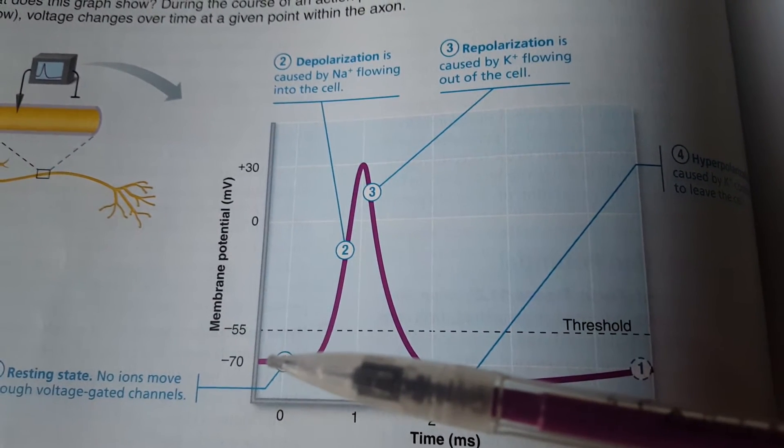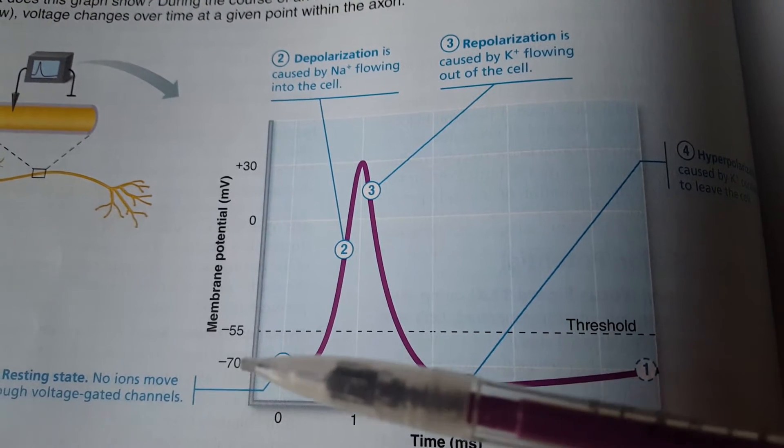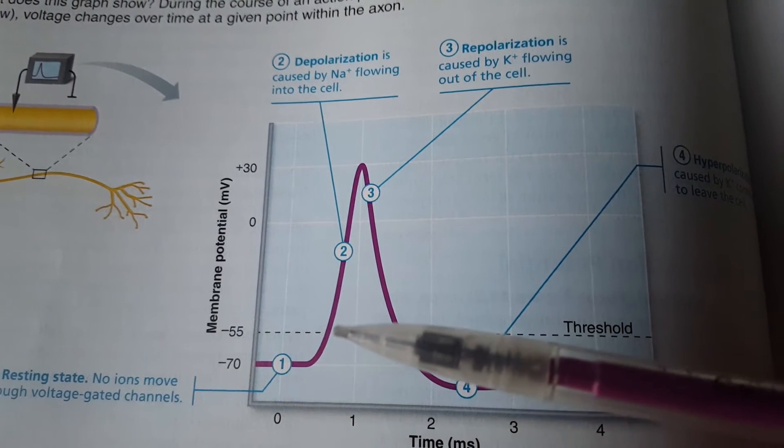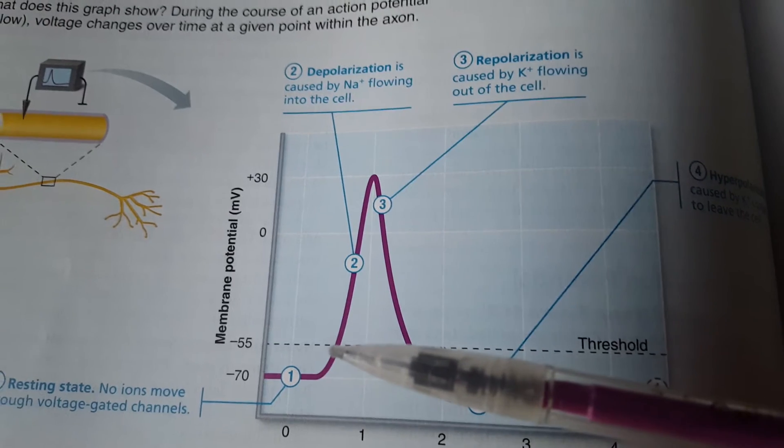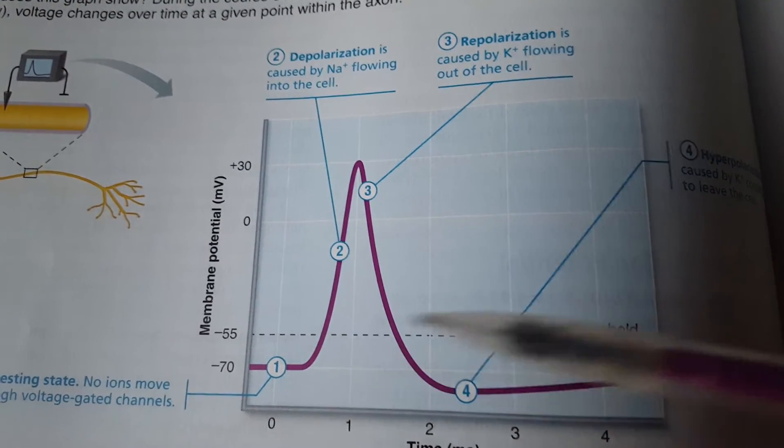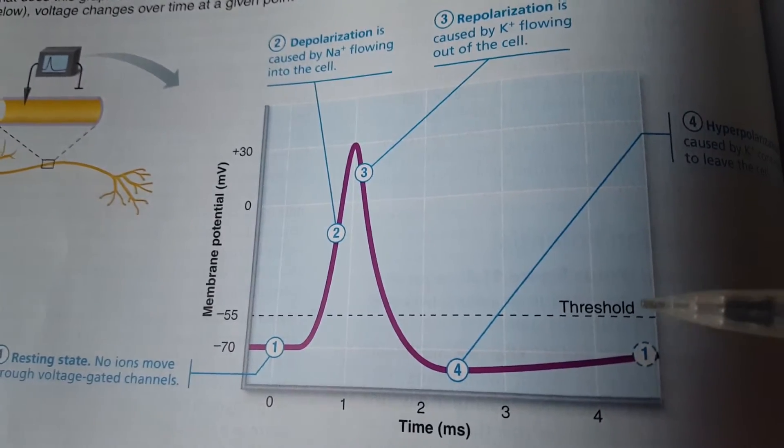So if we have stimulus that takes us from negative 70 mV to negative 55 mV, that number, that negative 55, is what we refer to as threshold.